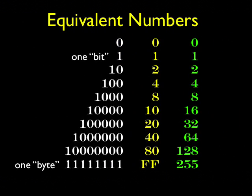Let's look at equivalent numbers in all three systems. White is binary, yellow is hexadecimal, and green is our own decimal numbers. Notice our decimal numbers 0 and 1 are common. But look at the other standard numbers in these systems — they're not what we'd call round numbers: 2, 4, 8, 16, 32, 64. They're all powers of 2. Those powers of 2 in hexadecimal are nice and even: 16 is 10, 32 is 20, 128 is 80. And there's a special meaning to 255 and FF — that's the largest 2-digit hexadecimal number and the largest 8-bit binary number. A bit is one binary digit, and one byte is 8 binary digits.